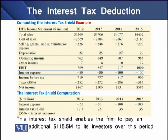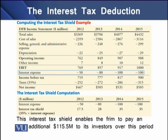From EBIT, we deduct interest expenses to get income before tax. Applying a tax rate of 30% gives us net income. To extract the interest tax shield from this illustration, we need two items: the annual interest expense and the tax rate of 35%. Multiplying these gives us the interest tax shield. The interest tax shield for 2012 is $17.5 million and for 2015 is $35 million. Adding up all four years, the interest tax shields total $115.5 million in additional payments to investors over the period.